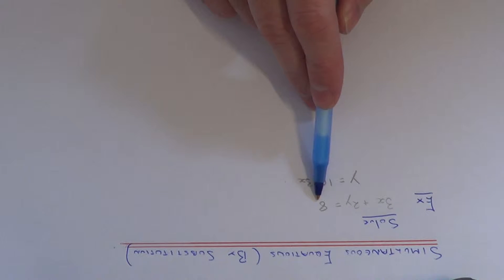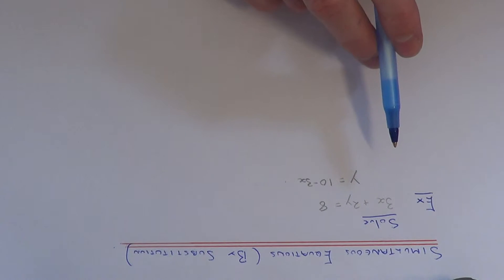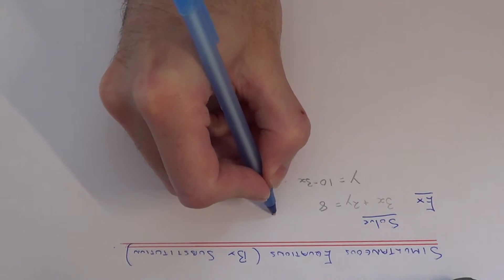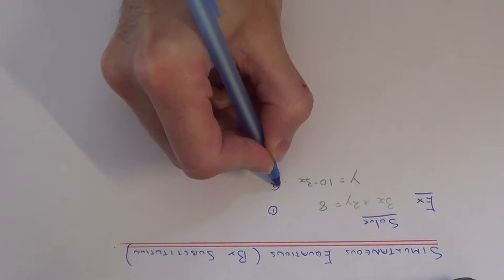So we've got 3x plus 2y equals 8, and we've got y equals 10 minus 3x. So we're trying to find the values of x and y. So let me first of all call this equation 1 and equation 2.